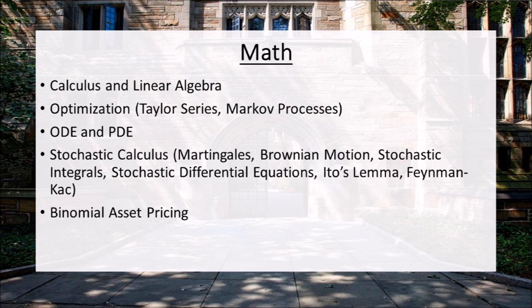Optimization is huge. I didn't list it here, but economics is a big area of quantitative finance — a lot of theories get applied there, and optimization is central to both. Taylor series approximations are useful to know, as well as Markov processes and other methods to find global and local minima and maxima of different functions. Stochastic calculus is probably the biggest for quantitative finance — very unique, a huge challenge to learn, but very useful. Key topics include Ito's lemma, Martingales, Brownian motion, the Feynman-Kac formula, stochastic differential equations, and stochastic integrals — all very important, especially in derivative asset pricing. Binomial asset pricing is also something you need to understand inside and out.